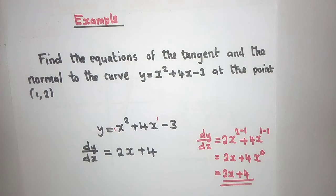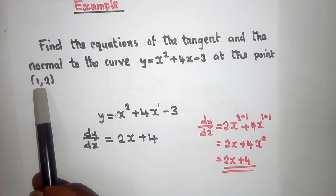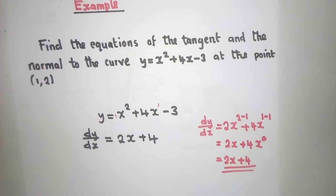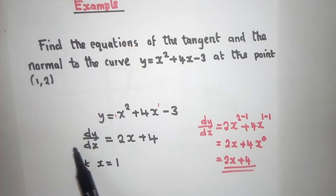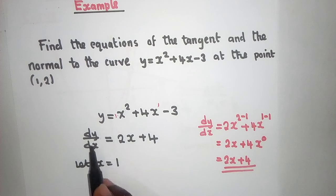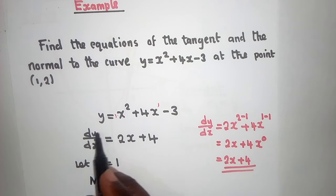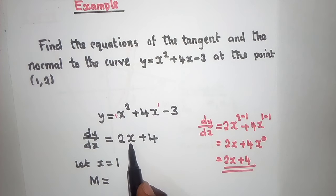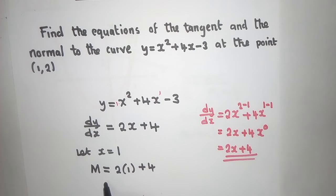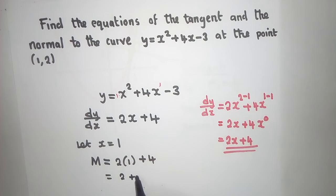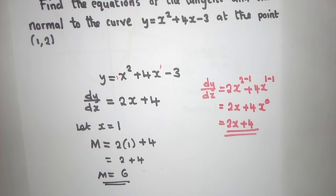Once you have dy/dx, you go to the given point, which is (1, 2). You let x = 1. The first derivative is the gradient, so now it's a matter of plugging 1 in where x is. It will be 2(1) + 4, and when we solve we have 2 plus 4, so our gradient is 6.